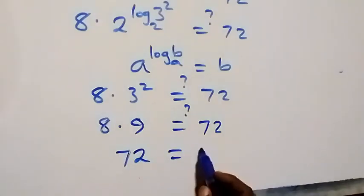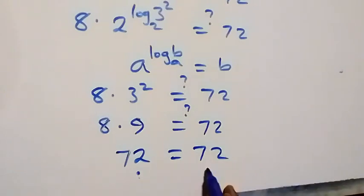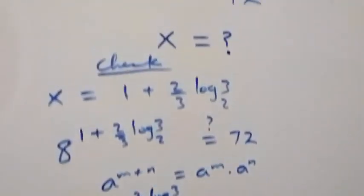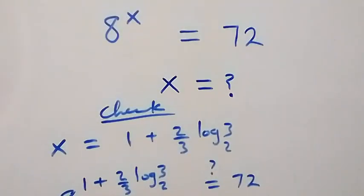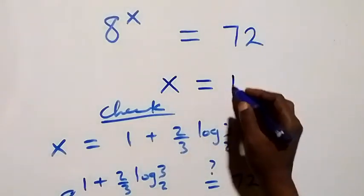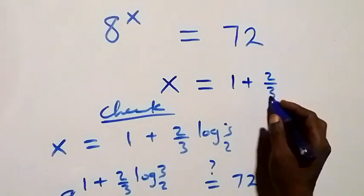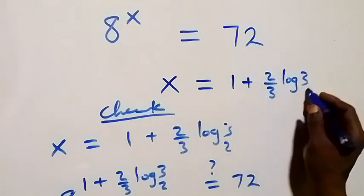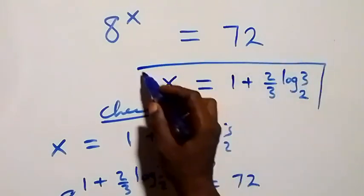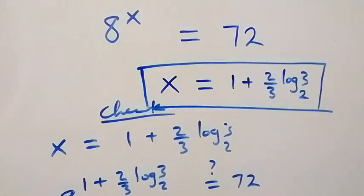The left hand side equals the right hand side, confirming our answer. Therefore the value of x is 1 plus (2 over 3) log 3 to base 2. Thank you for watching — don't forget to subscribe for more videos, give it a thumbs up, and leave your comments in the comment section. See you in the next class, bye for now.